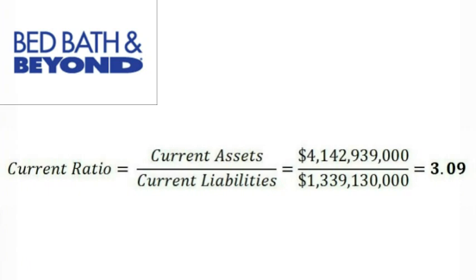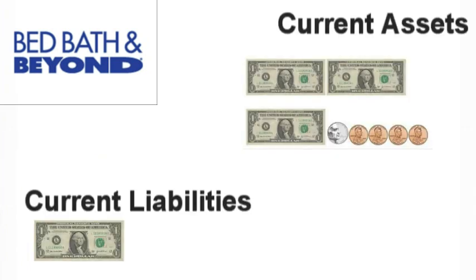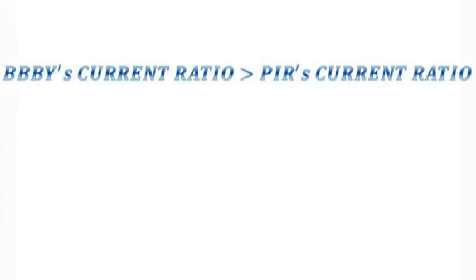Bed Bath & Beyond's current ratio is 3.09, which is higher than Pier 1's current ratio. Bed Bath & Beyond has $3.09 in current assets for every dollar it has in current liabilities. According to this, Bed Bath & Beyond is in much better financial shape and is of relatively low risk to both investors and lenders.